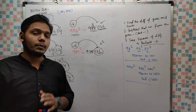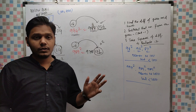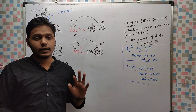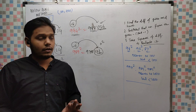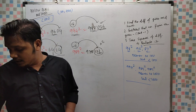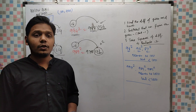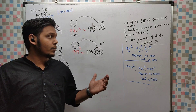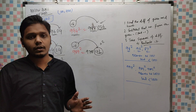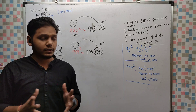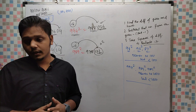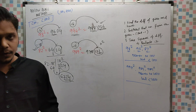By learning this method, you will be able to find squares of numbers nearer to 100 and 1000 within a short period of time. This is the end of this video. I hope after watching this video you will be able to understand and solve all types of such squares quickly. Thank you for watching.